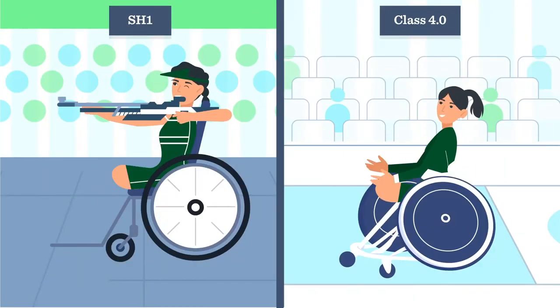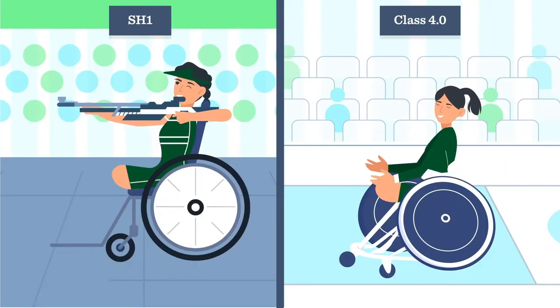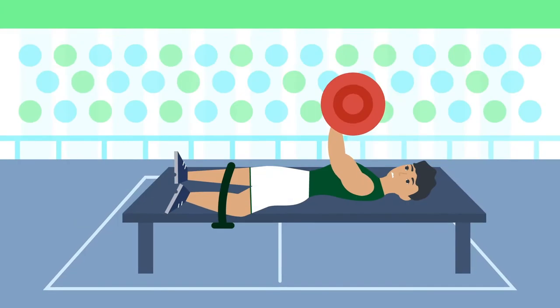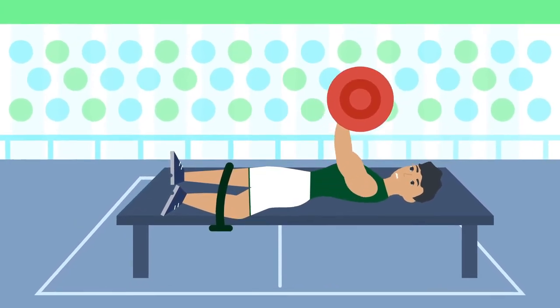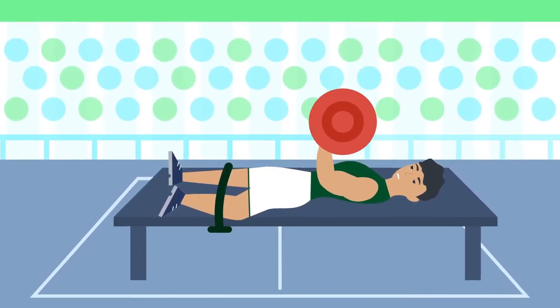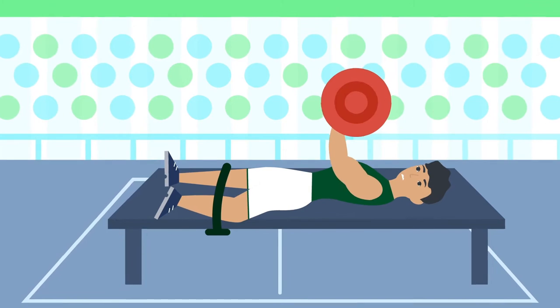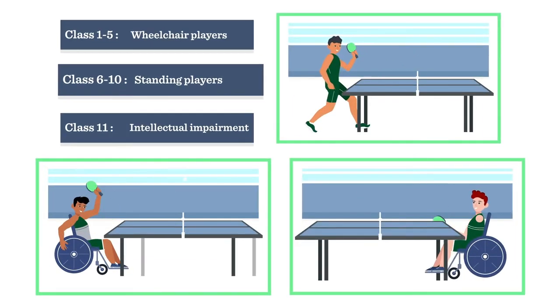For this reason, the classification system is specific to each sport. The number of classes also varies in each sport — some sports have only one class, while other sports have multiple classes.